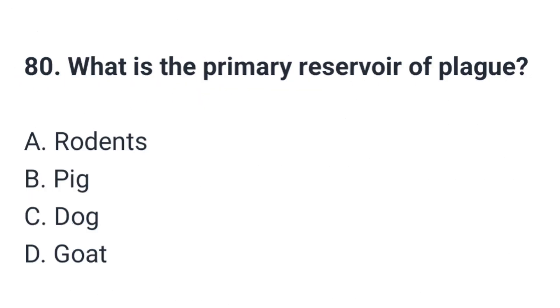Question number eighty: What is the primary reservoir of plague? The correct option is A: Rodents.